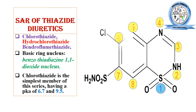The basic ring nucleus — benzothiadiazine 1,1-dioxide — consists of a benzene ring fused with a heterocyclic thiazide ring. At position 1 there is a sulfone group, position 2 has a nitrogen, position 6 has a halogen (chlorine), and position 7 has a sulfonamide group. We now examine the effect of substitution at each position.